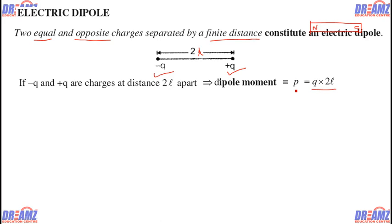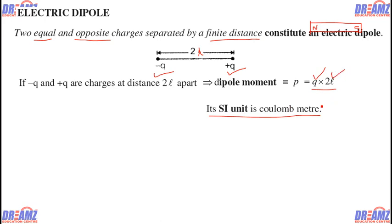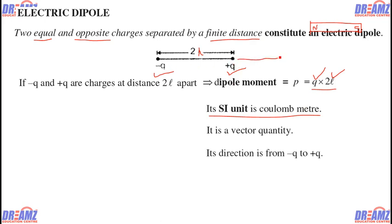Now the question arises: is p a scalar or a vector? It is a vector. The SI unit of p is coulomb-meter, and as it is a vector it must have a direction. The direction of the dipole moment is always from negative to positive. So the p vector is always directed from the negative charge to the positive charge.